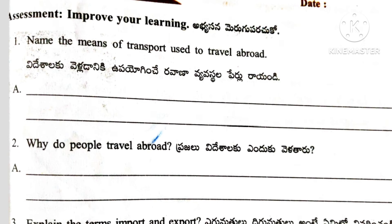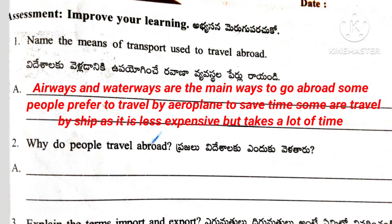Worksheet 6 — Assessment: Improve your learning. Question number 1: Name the means of transport used to travel abroad. Answer: Airways and waterways are the main ways to go abroad. Some people prefer to travel by aeroplane to save time. Some travel by ship as it is less expensive but takes a lot of time.